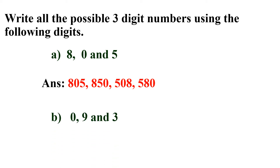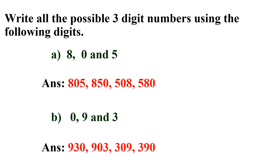B: 0, 9 and 3. You know, no three digit number shall begin with 0. So, we will start with the second digit, 9. Now, interchange the last two digits to get 903. The third digit is 3. So, 309. Interchange the last two digits to get 390. So, the answer is 930, 903, 309 and 390.